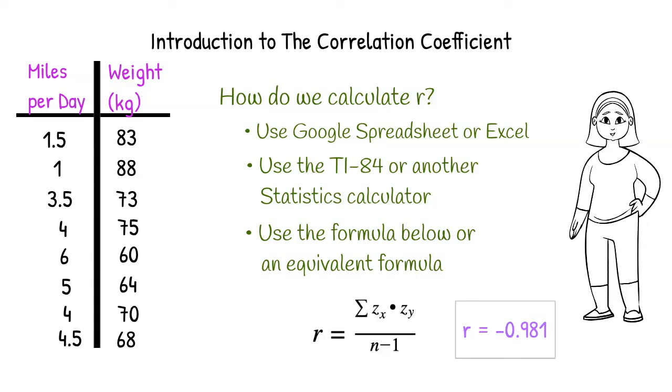But for now, let's interpret what this means. Since r is negative, the correlation is negative. Since it's close to negative 1, the correlation is strong. And based on the shape that we got from our scatter plot, we can say that there is a linear correlation. There is a strong negative linear correlation.